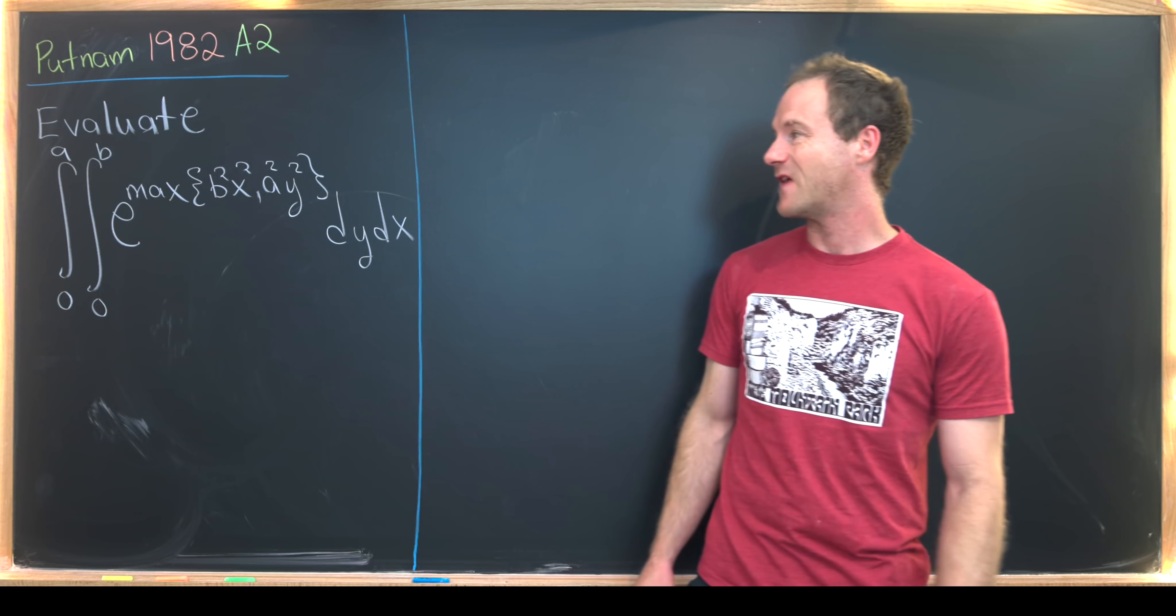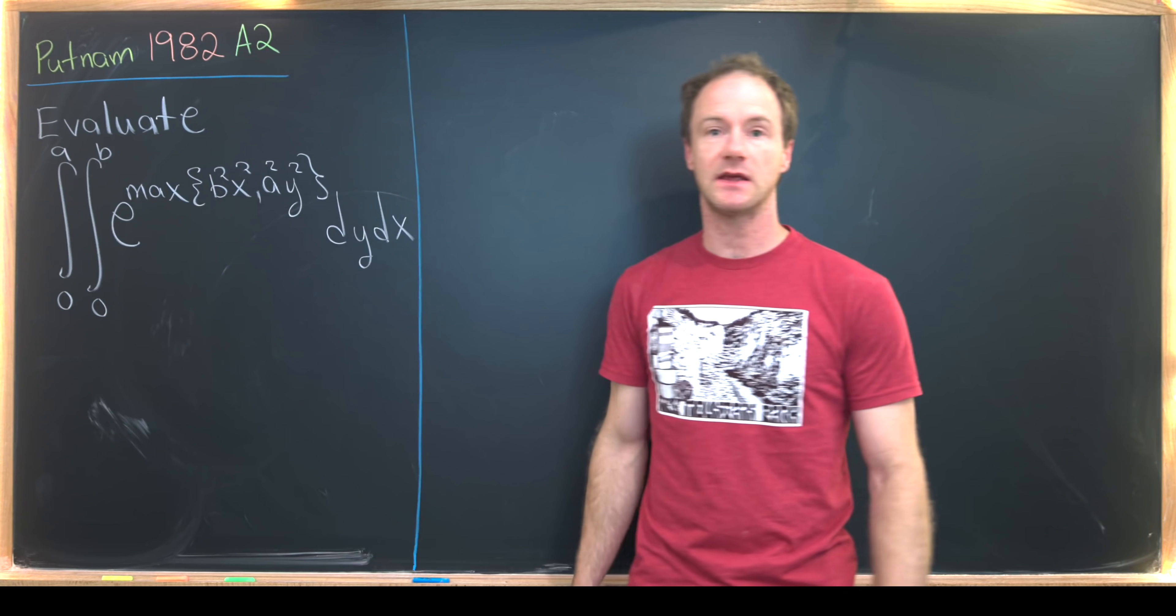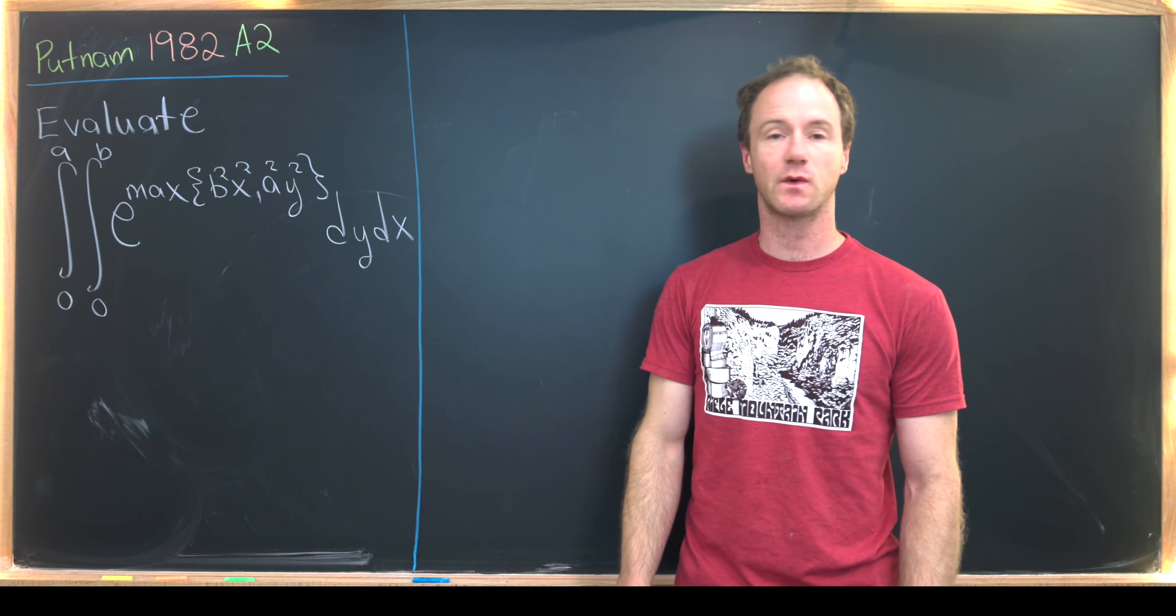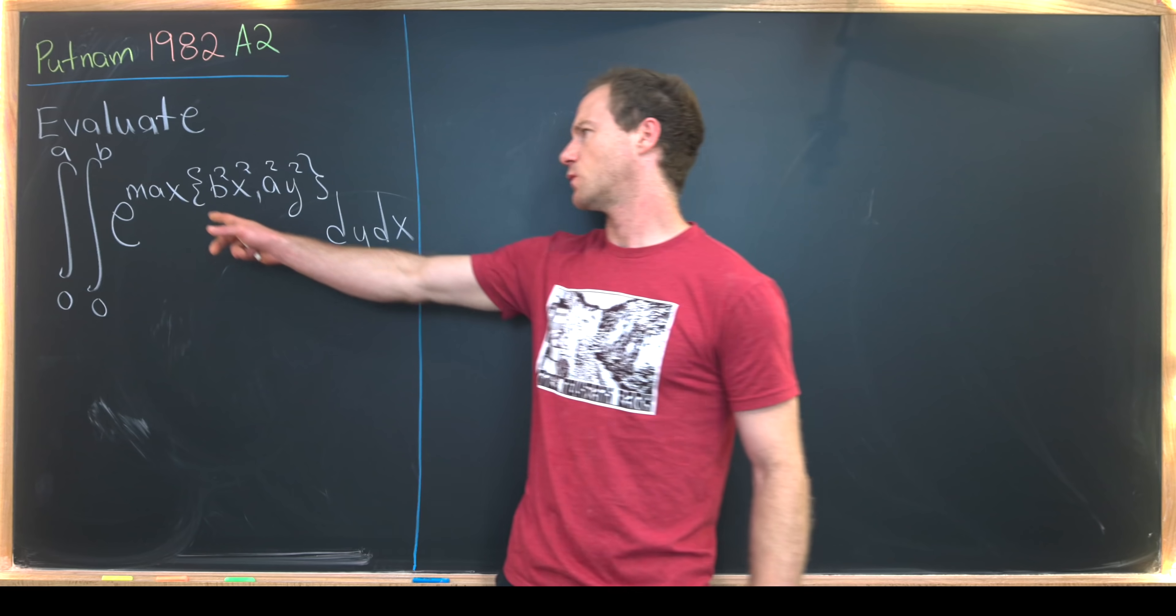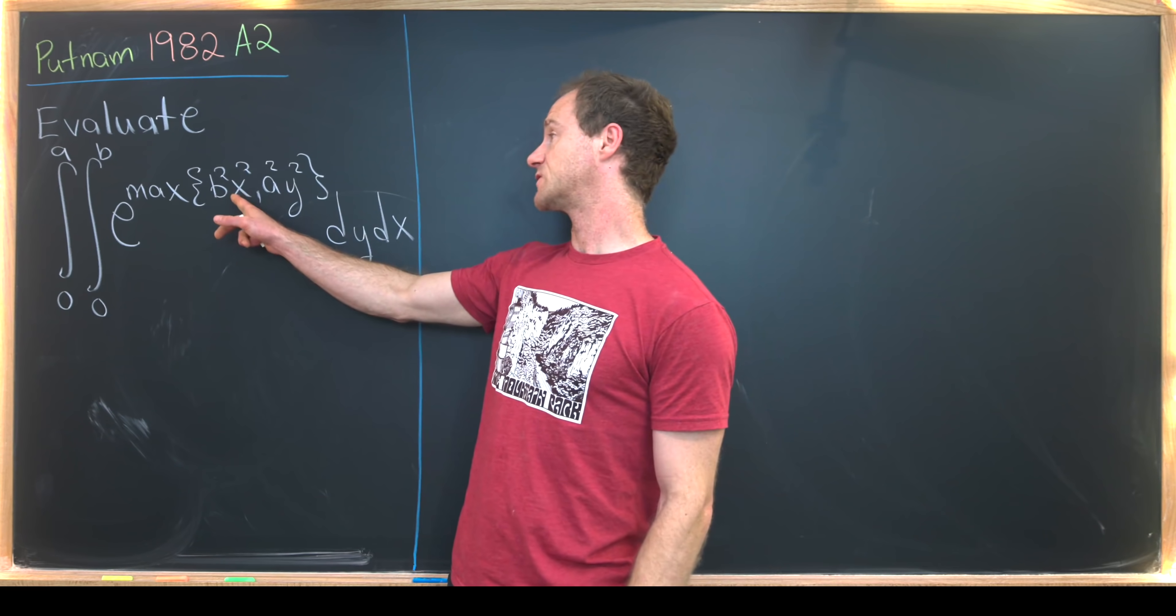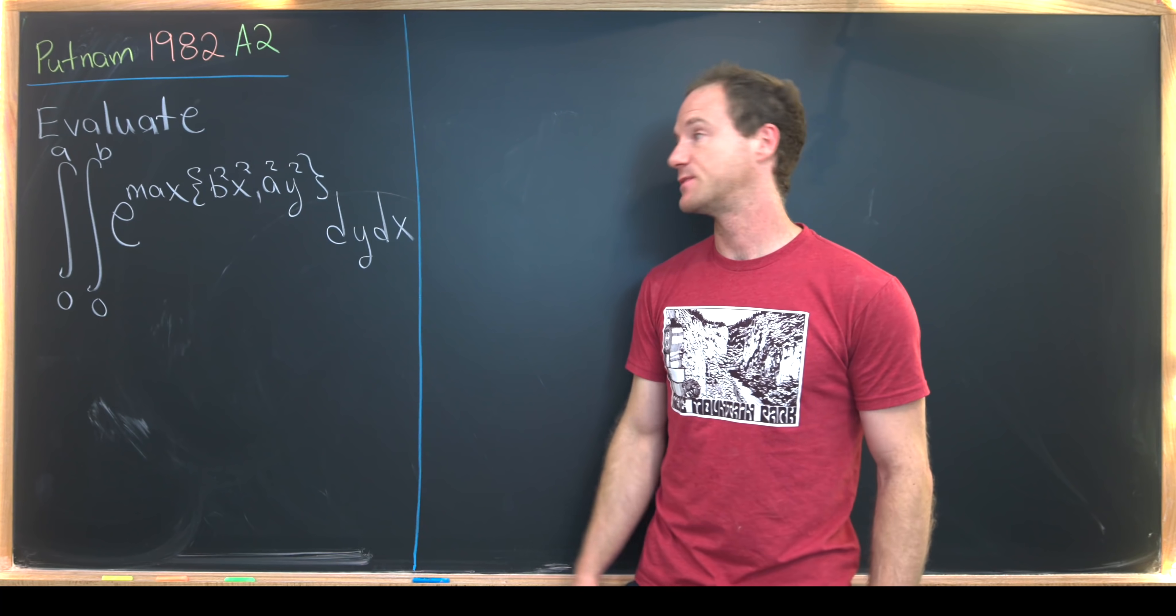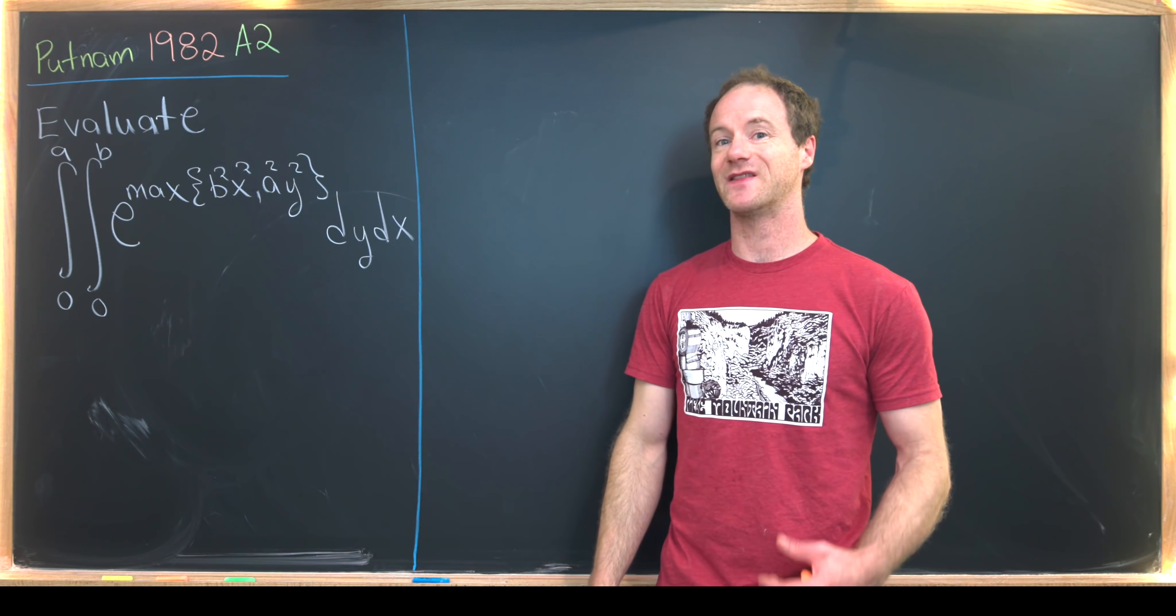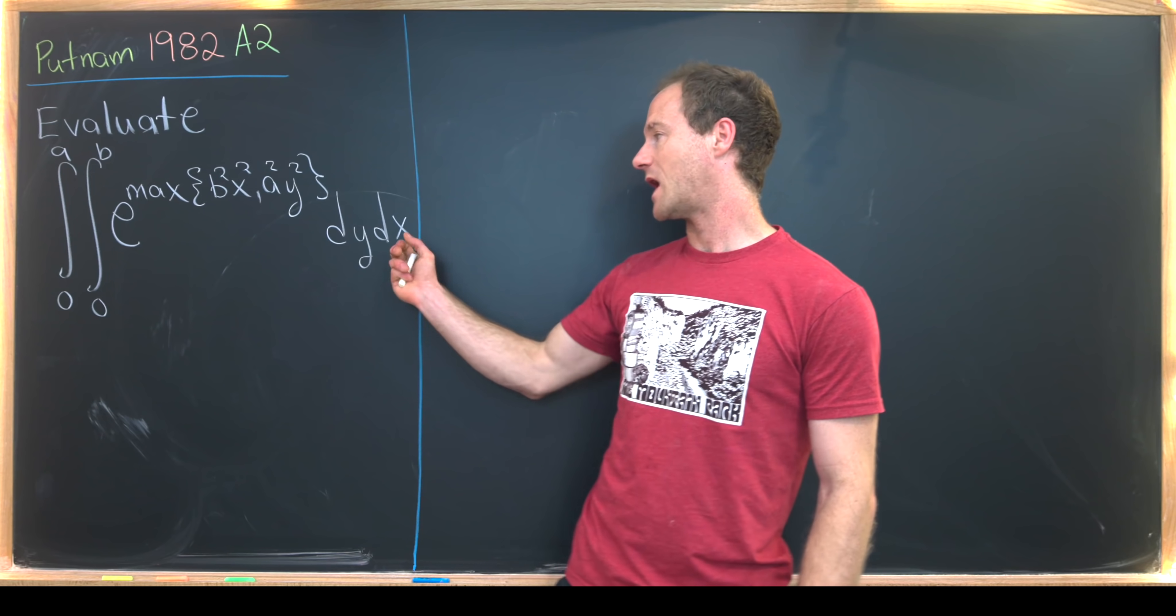We want to evaluate the double integral from 0 to A and 0 to B of e to the maximum of B squared times X squared comma A squared times Y squared. So what I mean by max here is in the region where B squared X squared is larger, we'll take that to be the value of the exponent. And when A squared times Y squared is larger, we'll take that to be the value of the exponent. And we're doing it in the order dy dx.